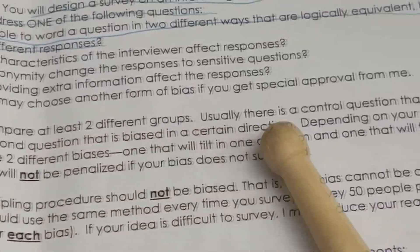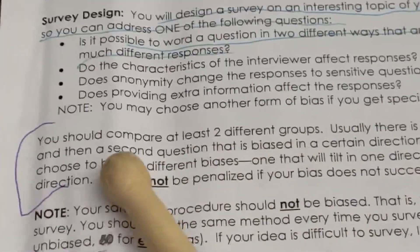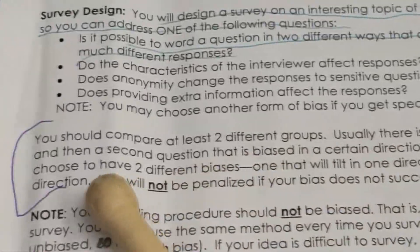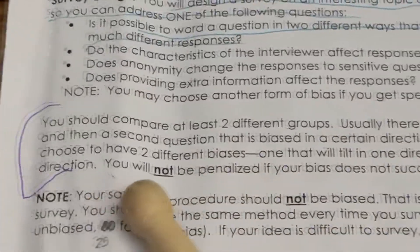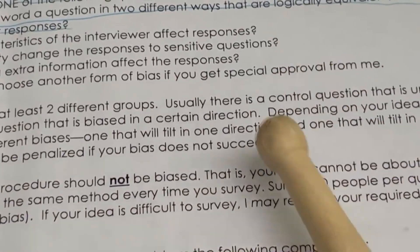Usually there's a control question that is unbiased, and then a second question that is biased in a certain direction. Depending on your idea, you may choose to have two different biases — one that will tilt one direction and one that will tilt another direction. You will not be penalized if your bias does not succeed.